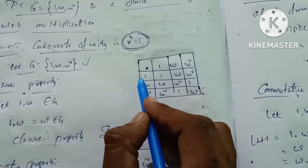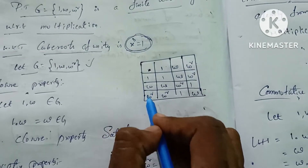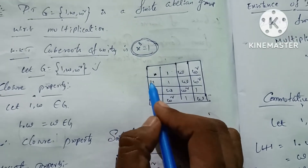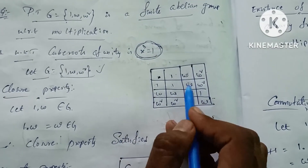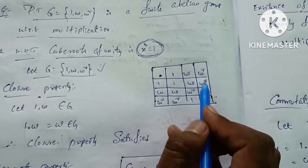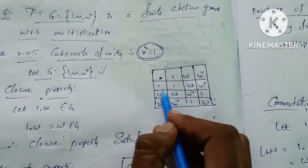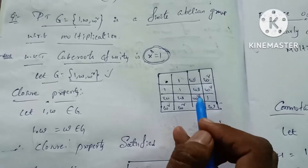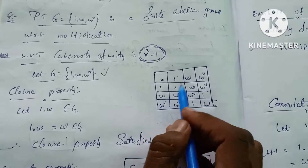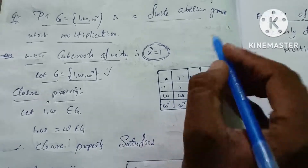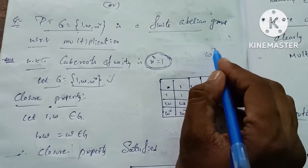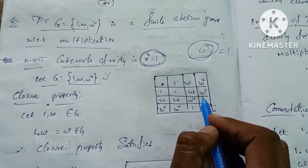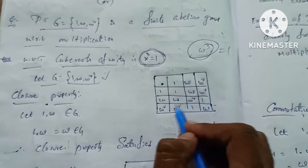The composition table has elements 1, omega, omega squared across rows and columns. 1 into 1 is 1. 1 into omega is omega. Omega into 1 is omega. Omega into omega is omega squared. Omega into omega squared is omega cubed, and omega cubed is equal to 1.